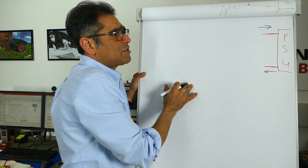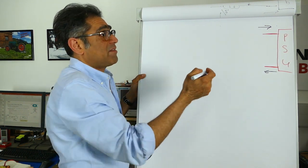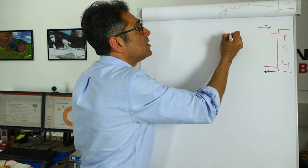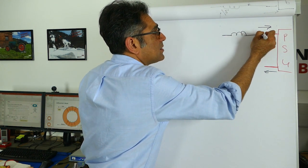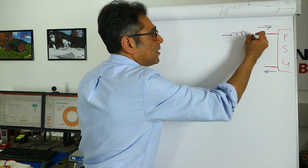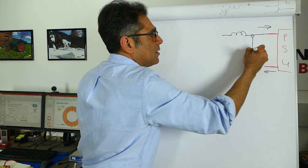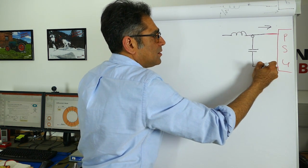So in order for us to filter this the most common way is a very simple LC filter. You have an inductor here connected to there and then a capacitor here connected to there.